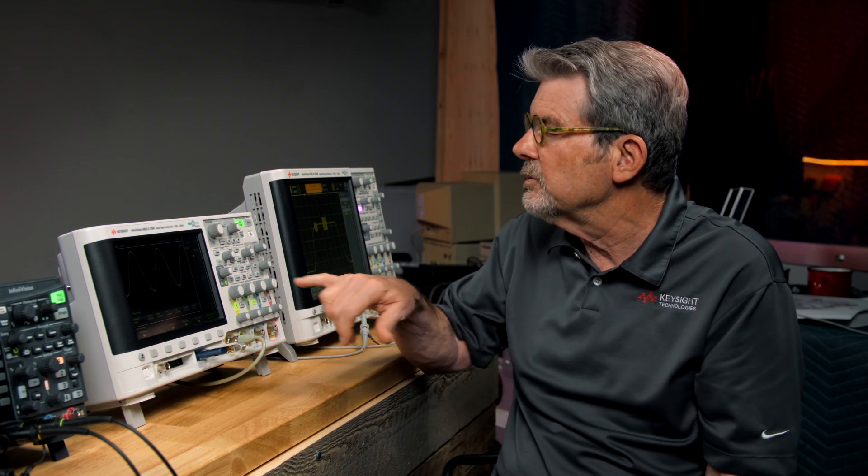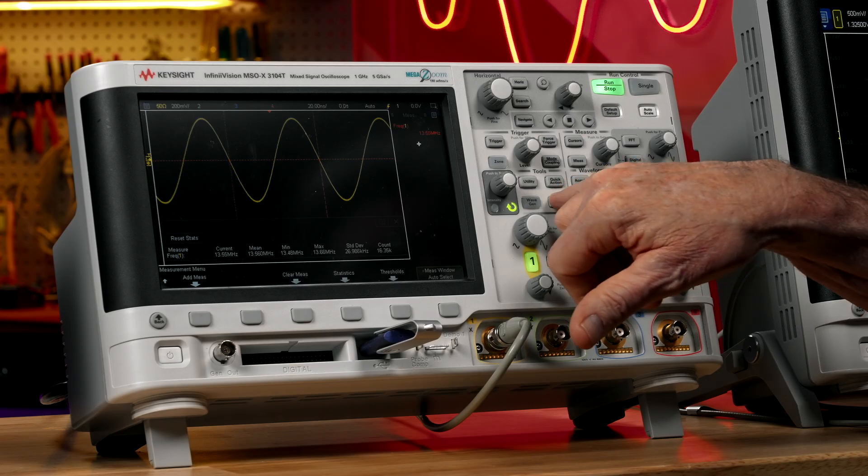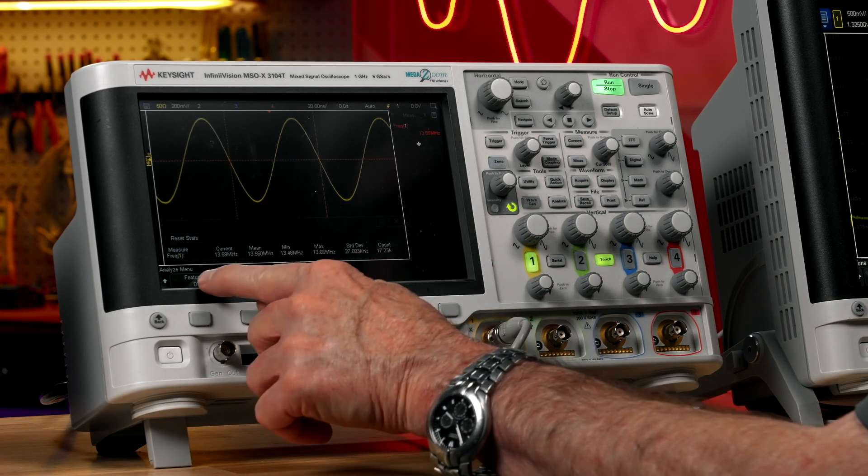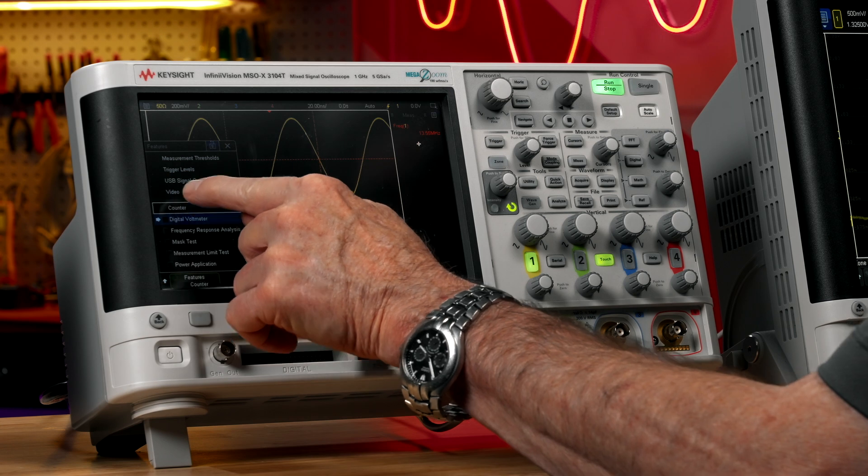Now let's do this measurement a different way and see if we can get a higher resolution measurement. I'm going to go into the analyze menu and select counter. Now the counter is a hardware-based counter measurement, just like a standalone counter. It makes measurements based on trigger crossings, not based on the digitized waveform.